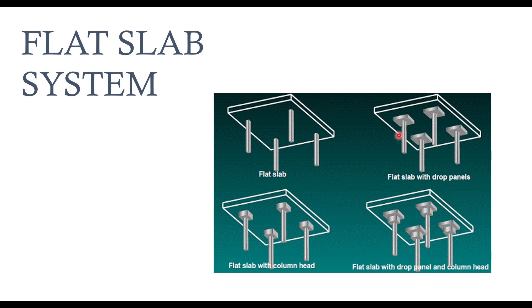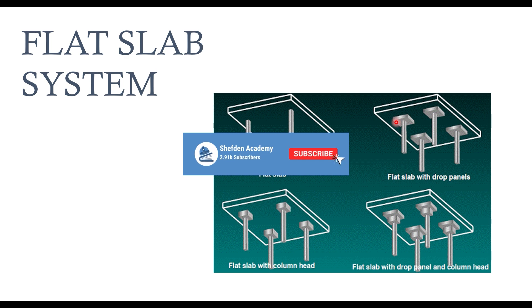But one solution to this is to provide a drop panel — wherever you have the column, you try to thicken the slab a little bit. So let's say your normal slab has a thickness of 175 mm; at the region where you have the column, you can include a drop panel of maybe 100 mm thick, so that where we have the column the slab is going to have a thickness of 275 mm. In that kind of situation, we try to avoid the punching effects which the column would impose on the slab, and this makes your design a little bit more economical.